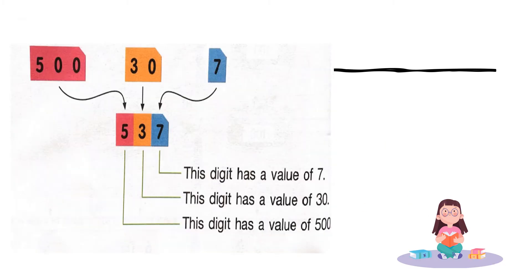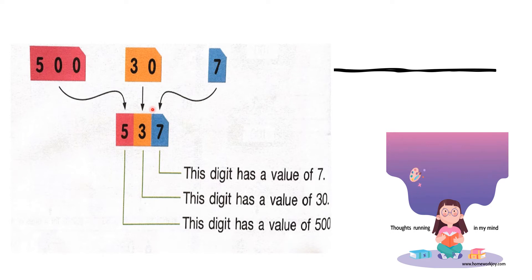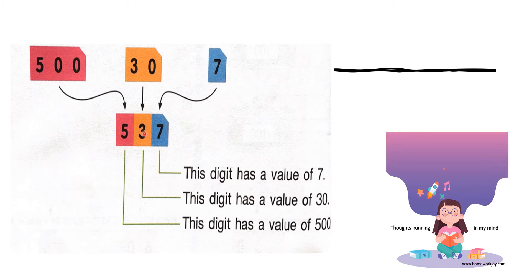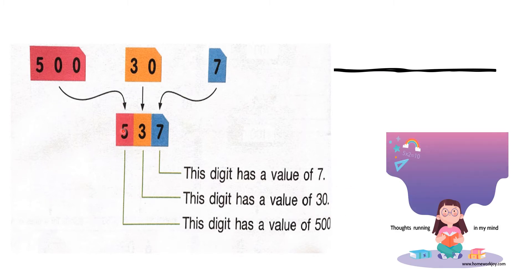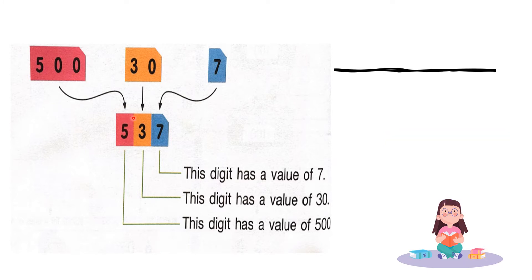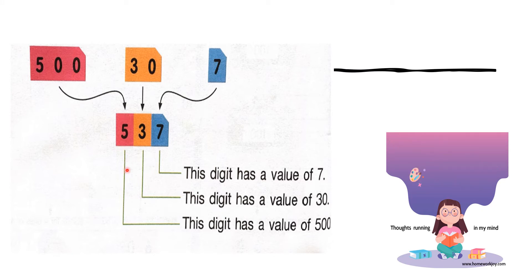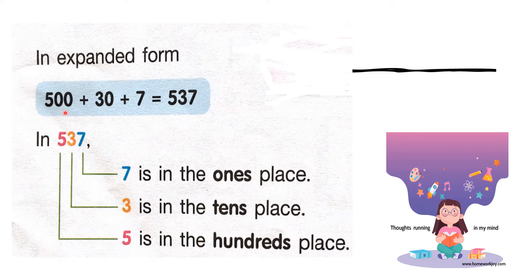537. We can write it as 537. The digit value — remember, value means that digit's value. For example, in 1s (colored blue) the value is 7. In 10s (colored orange) the value of 3 is 30. In 100s (colored pink) the value of 5 is 500. So the expanded form is 500 plus 30 plus 7 equals 537.